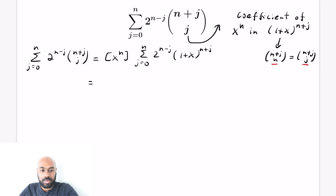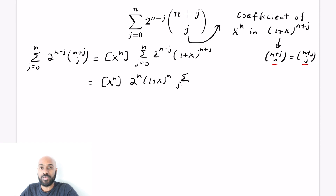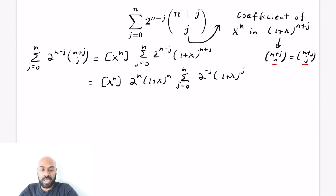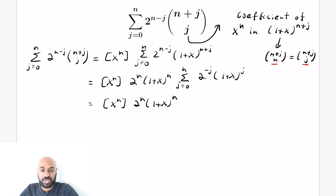Recognizing that, the entire sum can be represented as the x to the n coefficient of a sum of power series. Our original sum is the coefficient of x to the n in the sum j equals 0 to n of 2 to the n minus j times 1 plus x all raised to the n plus j. We pull out the 2 to the n and 1 plus x to the n factors since they don't depend on j, leaving the sum j equals 0 to n of 2 to the negative j times 1 plus x to the j.